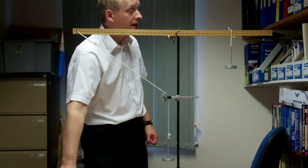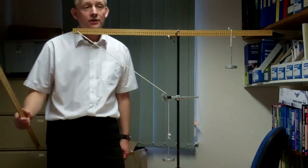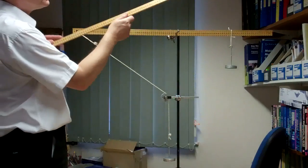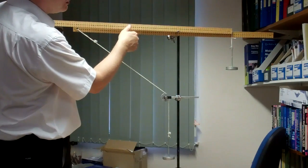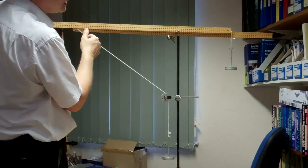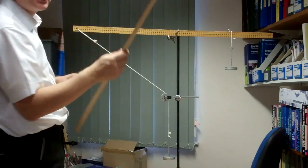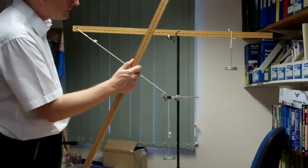Now what I want to do is measure the distance to that point. So from the pivot to the point of suspension is 28 centimetres. That's the distance that we would use to calculate the moment of that force.